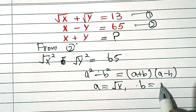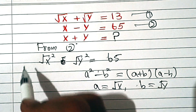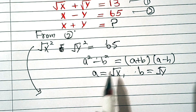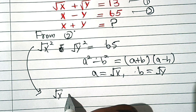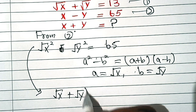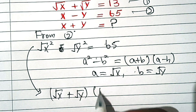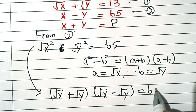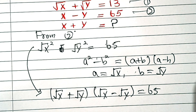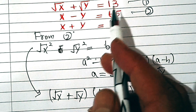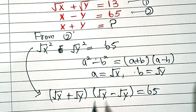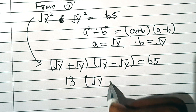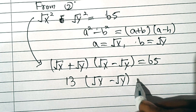And b = √y. So this equation becomes (√x + √y)(√x − √y) = 65. Now substitute the value of √x + √y, which equals 13, so we have 13 × (√x − √y) = 65.